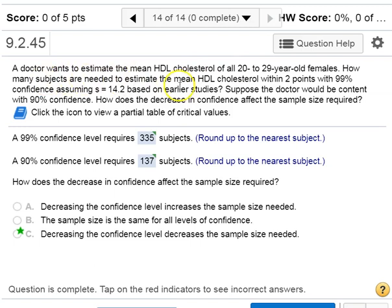If we want our estimate of the mean to be within two points, and we want 99% confidence.